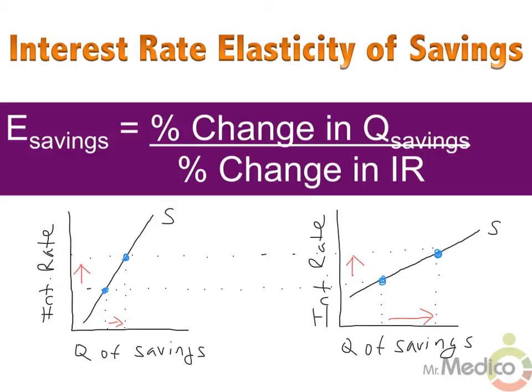A good question to think about from a policy perspective is whether tax breaks that increase the return to savings will lead to a large increase in savings or a small increase in savings. Not all economists agree on how responsive savers are to a change in interest rates, and that's what usually happens when you talk about macroeconomic issues and possible economic policies. But the general consensus seems to be that in the short run, the elasticity of savings is relatively inelastic, and the supply curve of savings would therefore be relatively steep.